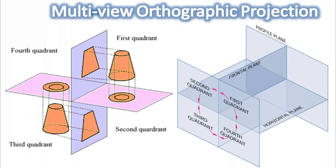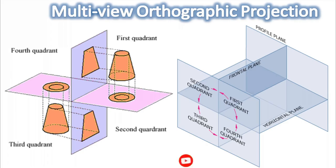In the previous part one video, we have seen what is orthographic projection. In this video, we are going to see what are the four quadrants used in orthographic projection, what are the types of projection systems used, and where to position each two-dimensional view. It is very important to understand orthographic projection to study engineering graphics, so watch this video completely without skipping. If you have not subscribed the channel yet, subscribe and press the bell icon to get notifications.